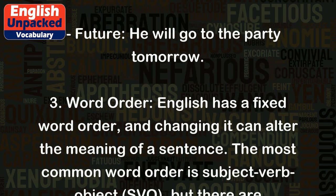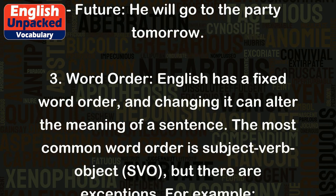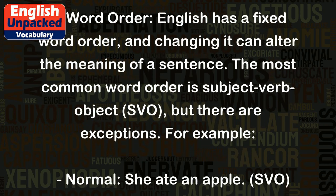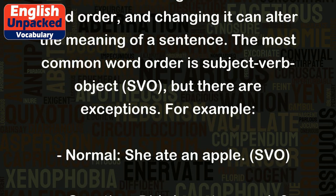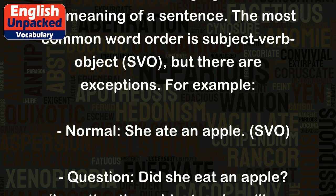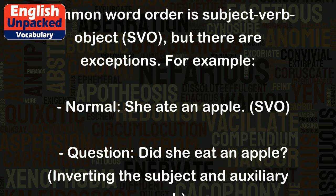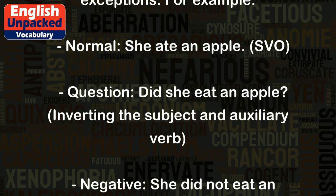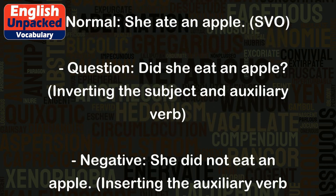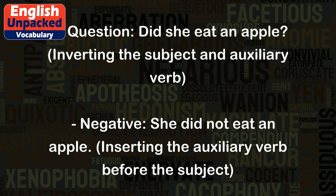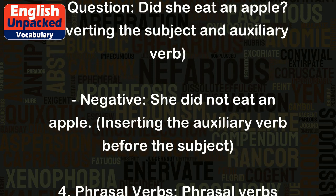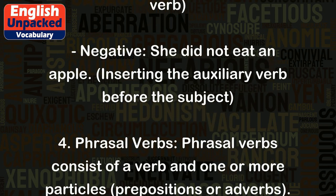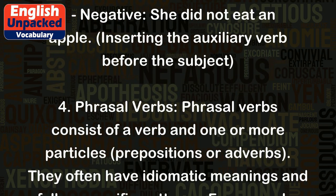3. Word Order. English has a fixed word order, and changing it can alter the meaning of a sentence. The most common word order is subject-verb-object (SVO), but there are exceptions. For example: normal — she ate an apple (SVO). Question — did she eat an apple? (inverting the subject and auxiliary verb). Negative — she did not eat an apple (inserting the auxiliary verb before the subject).